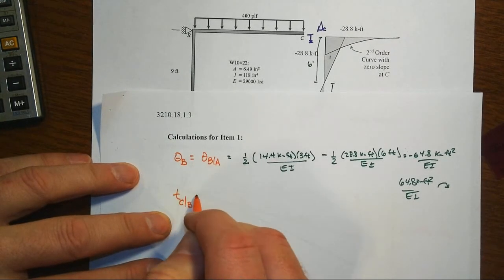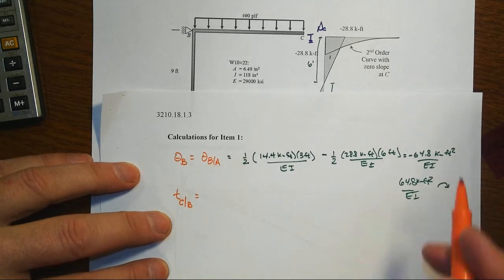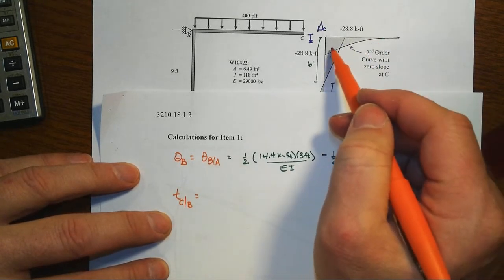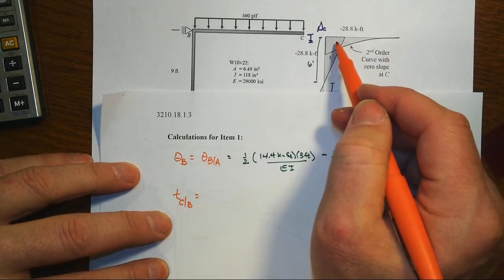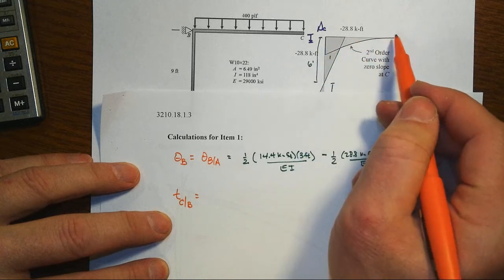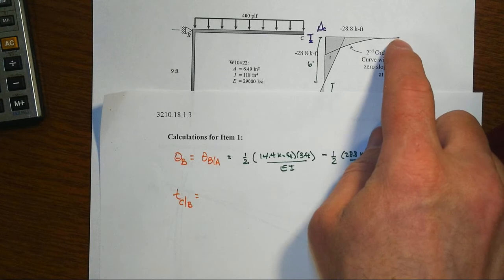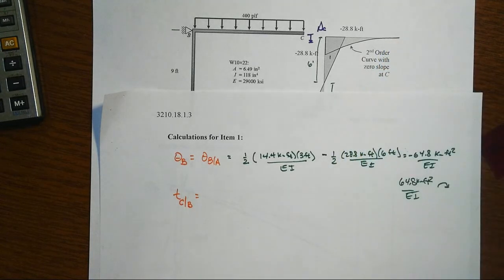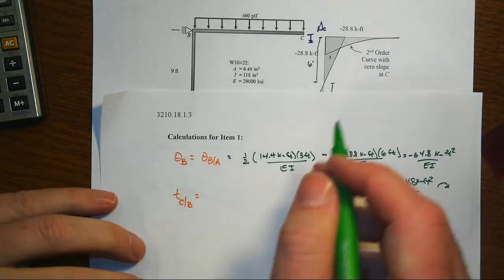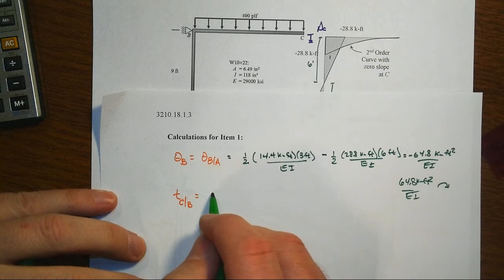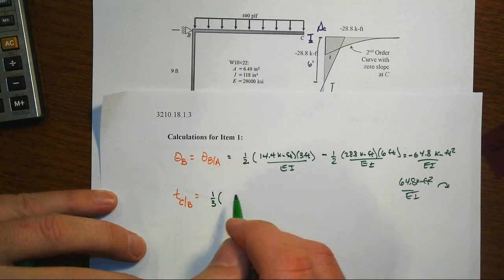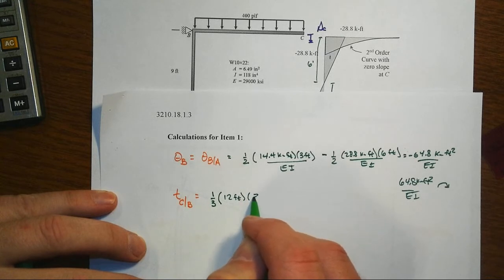Tangential deviation C with respect to B, that's the second moment area theorem. That's going to be the area of M over EI between the two points of interest, that's B and C. So that's a second order curve with a zero slope here, so that means that we have a vertex over here. That means the area is one third of the base of 12 feet times the height of 28.8, that is a negative kip foot there,